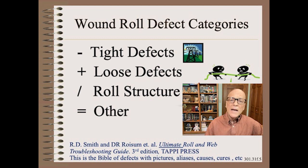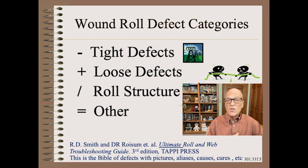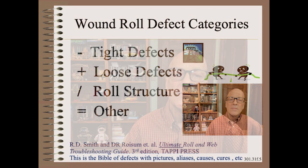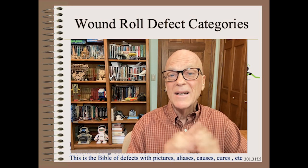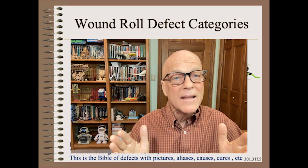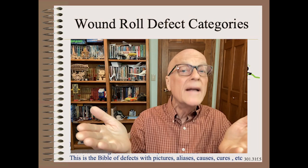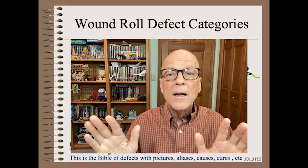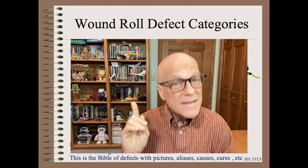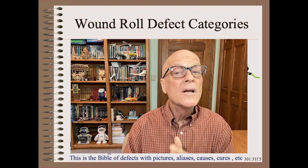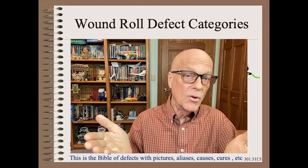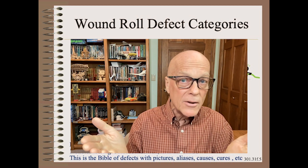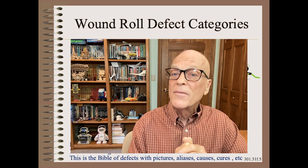In any case, if we look at the first three categories, we see wound roll tightness is an important controllable parameter. Please note, however, that it is quite naive to think that you can solve your winding problems, whatever they are, by just turning knobs. Sometimes you need to redesign the web or the winder to reduce certain defects enough to keep people happy.